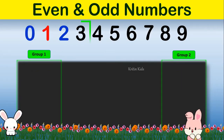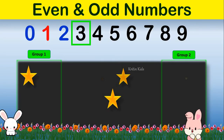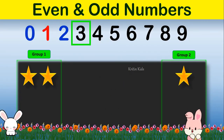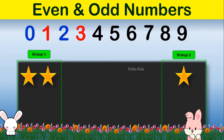Now let's take the next number, number 3. When you divide 3 into 2 groups, you can see 1 group has 2 items and 1 group has 1 item, meaning both the groups don't have equal number of items. So number 3 is an odd number.